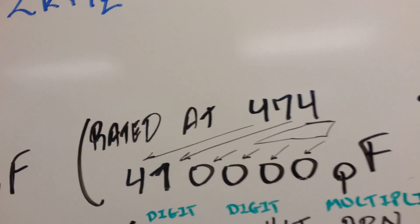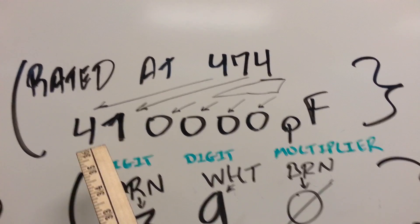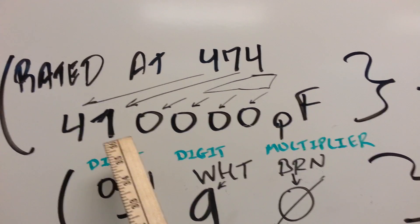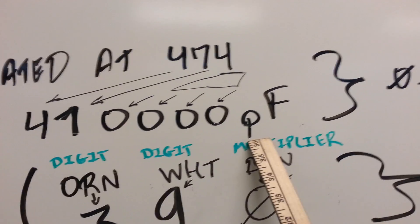And 474 corresponds to the rating of the capacitor. The first number is a digit, the second digit, followed by a multiplier. It's given in picofarads.